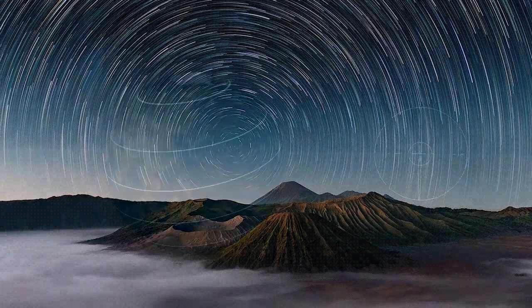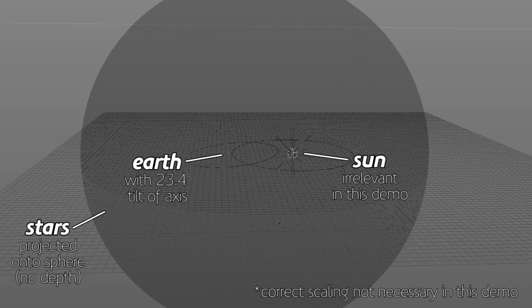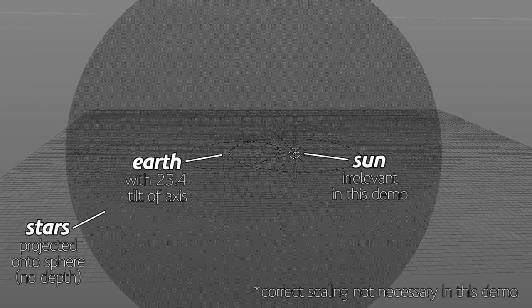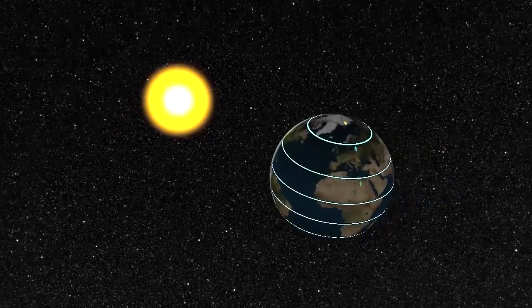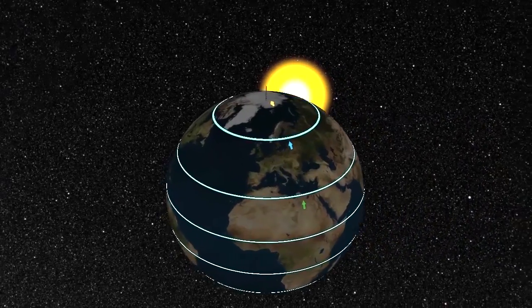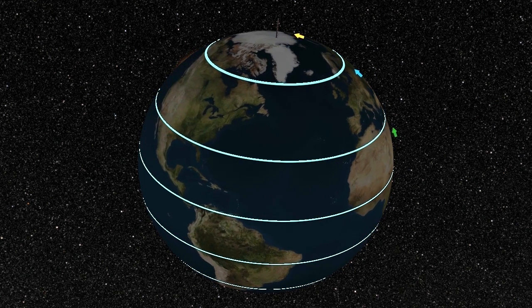I've made a basic model of the earth tilted on its axis, which doesn't make a whole lot of difference, and the stars are basically projected onto a giant sphere. So it's not taking everything into account of course, and the stars aren't going to be in the right place, but it will be sufficient for this demonstration.